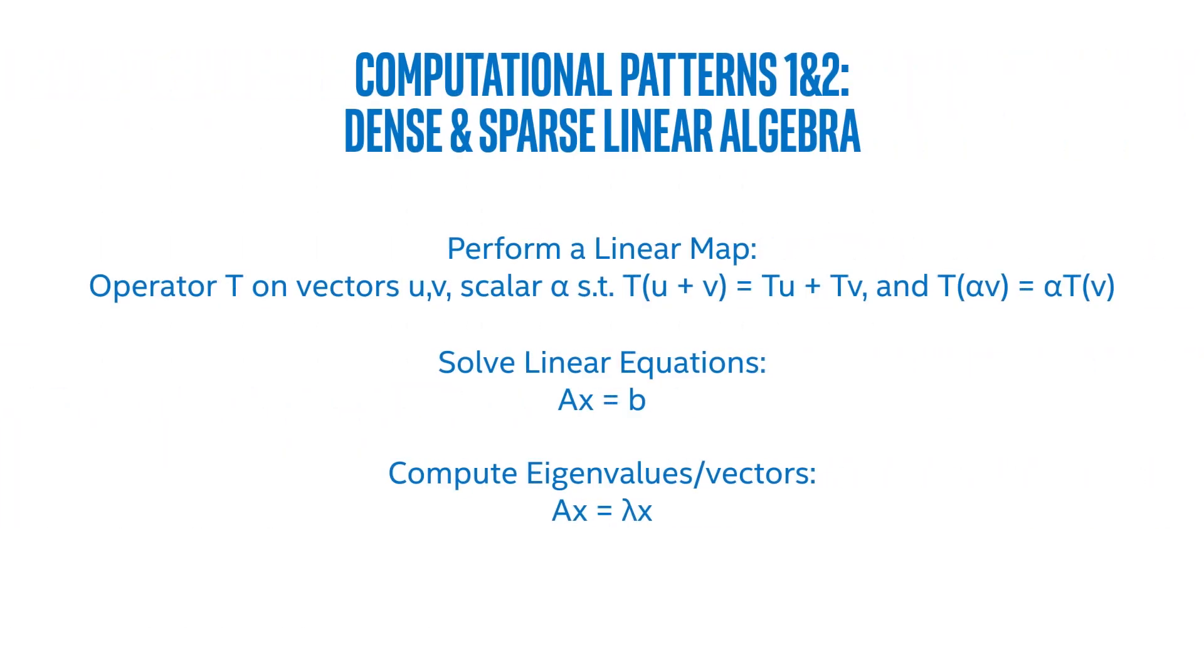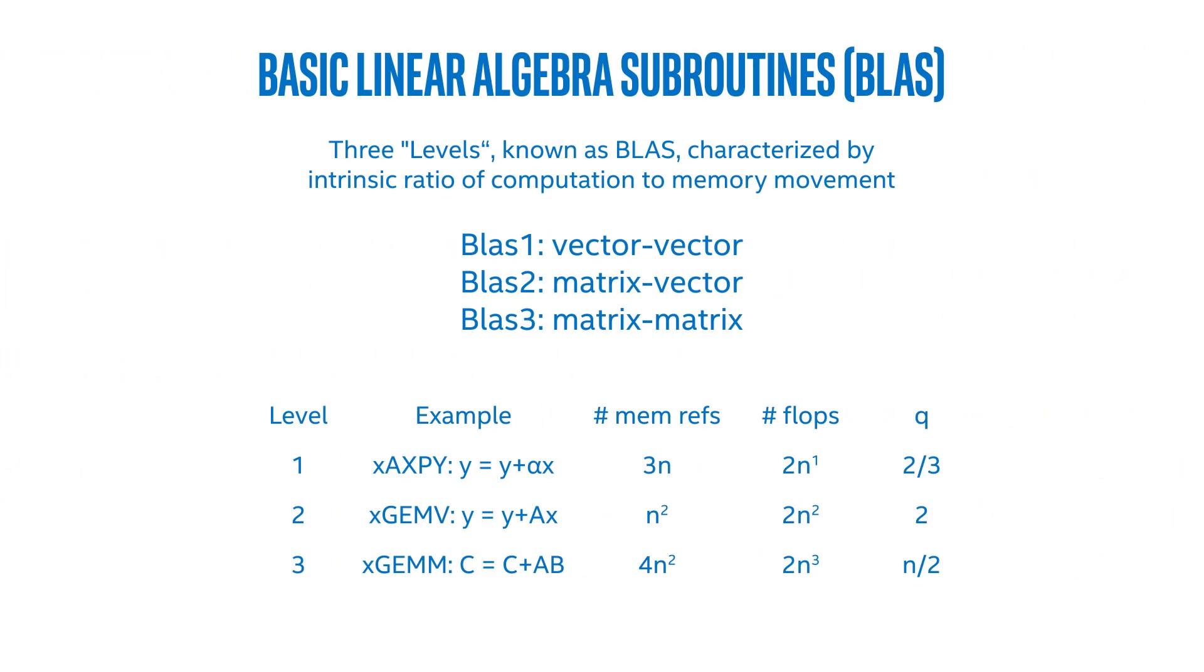What are some examples of this? Well, we can do a simple linear map, we can more generally solve linear equations, or we can compute eigenvalues or eigenvectors. In general, these are kind of canonized in a set of basic linear algebra subroutines. These three levels, known as BLAS, are characterized by their intrinsic ratio of computation to memory movement. In BLAS 1, we have simple vector-vector operations. In BLAS 2, we have matrix-vector, and BLAS 3, matrix-matrix, with the most intense computation to memory movement.